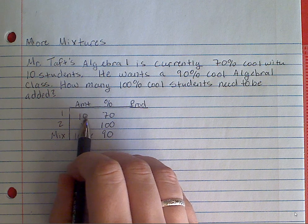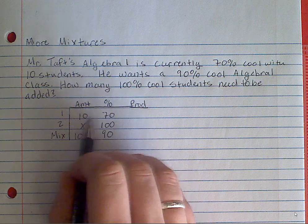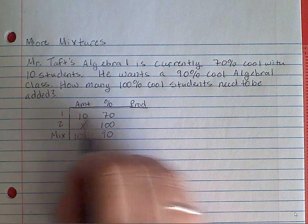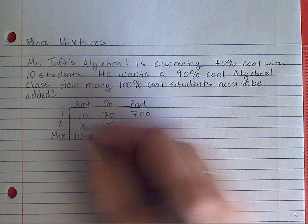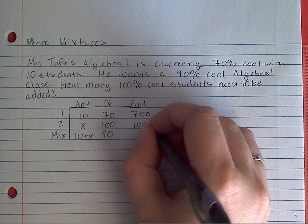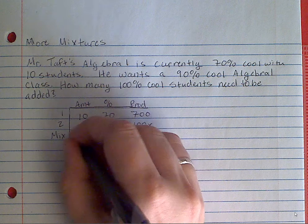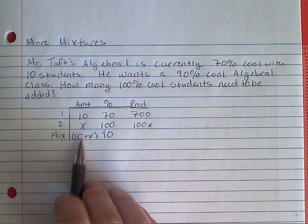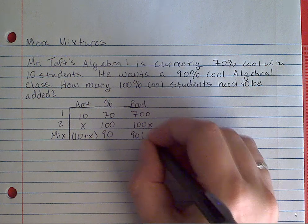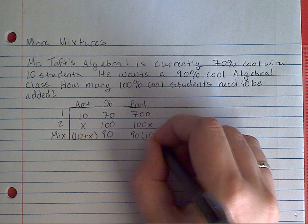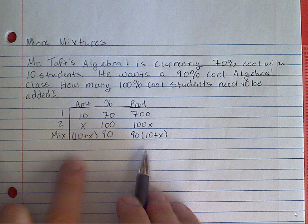So I'm going to multiply straight across here. I'm going to do 10 times 70 which is 700. And then this is 100x. Now when I multiply here, I need to put this in parentheses. So I'm going to do 90 and then in parentheses 10 plus x. So here's my table.